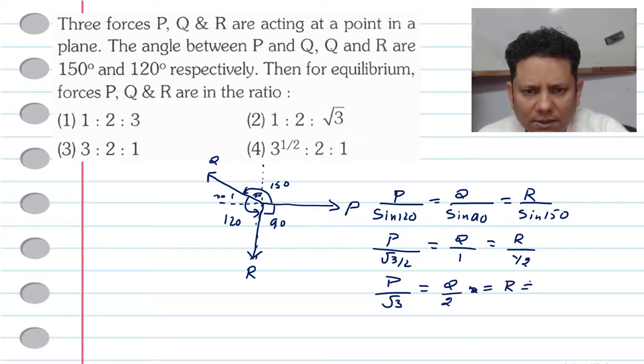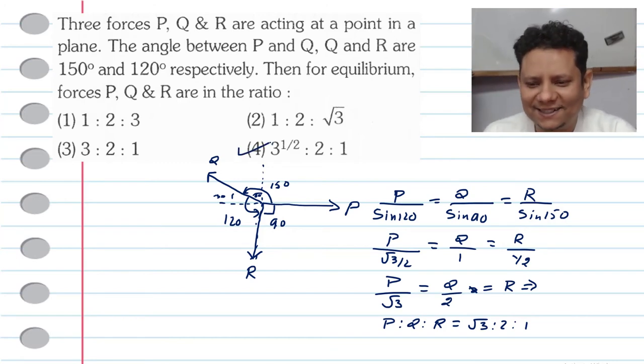Now that means if we talk about ratio, so we can write P to Q to R will be equal to root 3 to 2 to 1. That means that option number 4 would be the right answer.